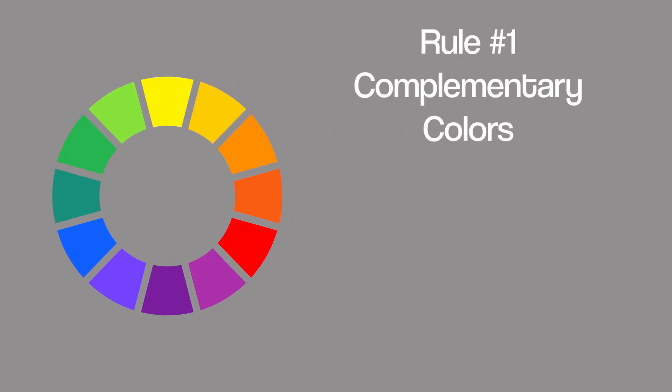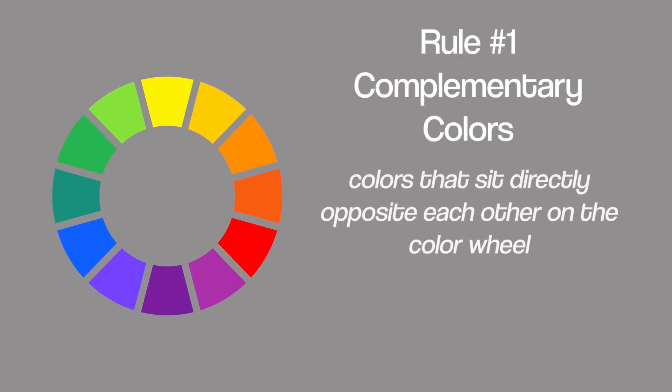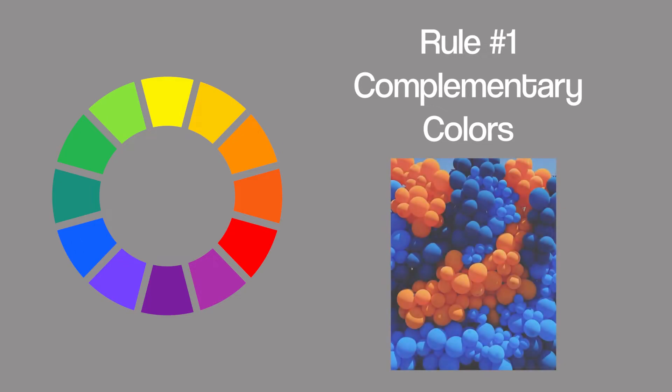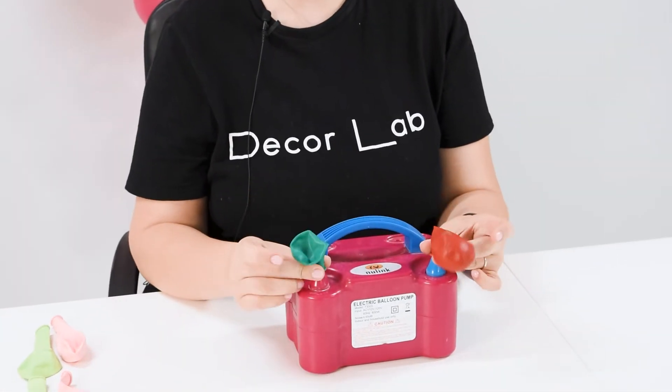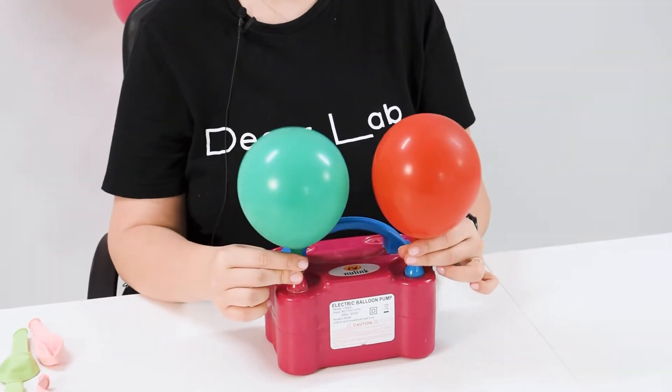Rule number one: complementary colors. Complementary colors are colors that sit directly opposite each other on the color wheel, and this is one of the easiest color palettes to create. Just pick two colors that are on opposite sides and you know they look good together. You can play around a little and use different shades of each color to change the look.